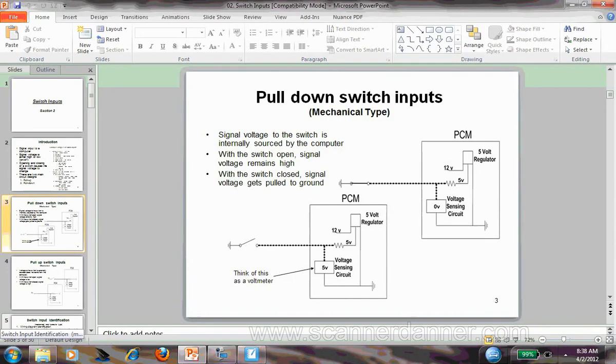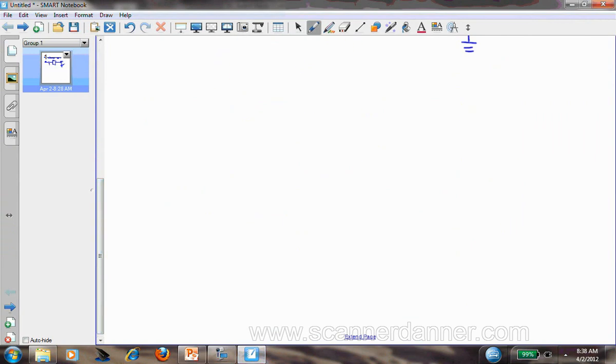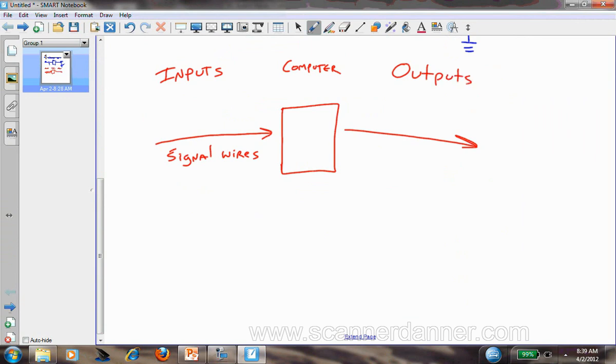Some terminology that we're going to need here. When we talk about computer systems, we have wires that come into the computer, and we have wires that come out of the computer. And we'll call these wires that come in inputs, and we'll call these signal wires. Inputs we'll call signal wires.